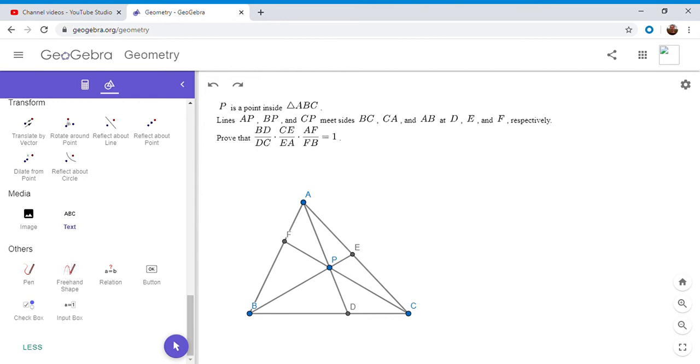And he first discovered this theorem, and he published it in a book called The Book of Perfection. So he had a bunch of theorems in geometry, and he thought this was so great that he put it in his Book of Perfection.